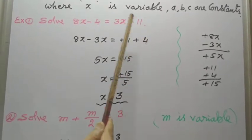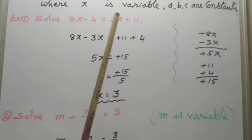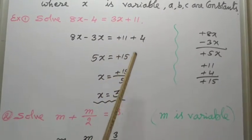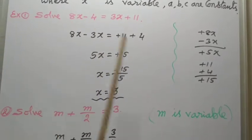We know that if we transfer from LHS to right-hand side, or right-hand side to left-hand side, its sign changes. If it is having plus, it changes to minus, or if it is minus, it changes to plus.